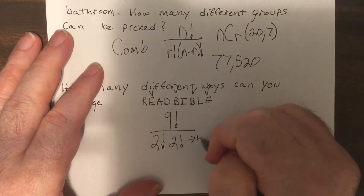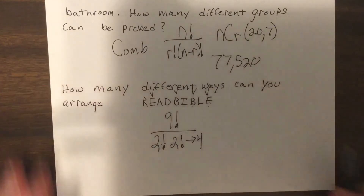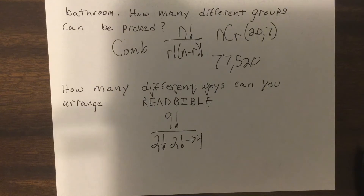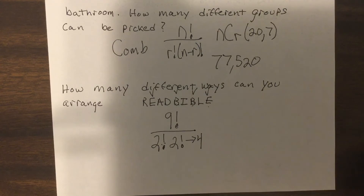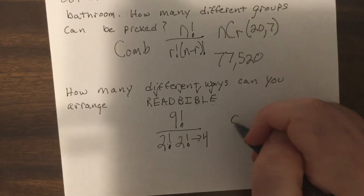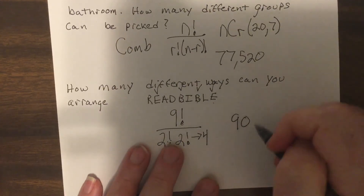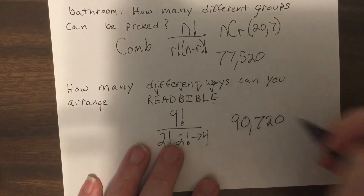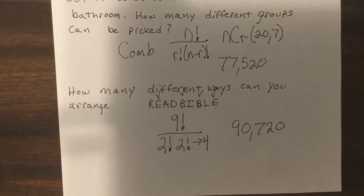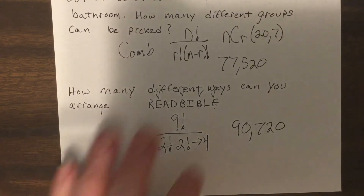So on the calculator: 9 factorial divided by 4 equals 90,720 arrangements of the letters in READ BIBLE.